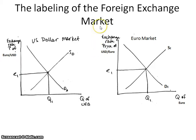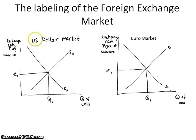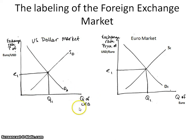When we're talking about the foreign exchange market, we're talking about the exchange rate of currency between two countries. In this case, I have the U.S. and the E.U., so we're looking at the dollar and the euro market. On the horizontal axis, you've got the quantity of U.S. dollars — many times written as USD.